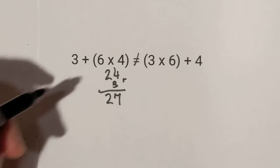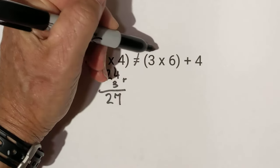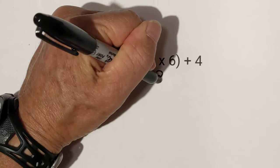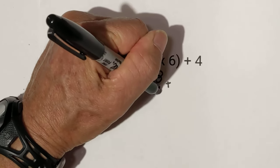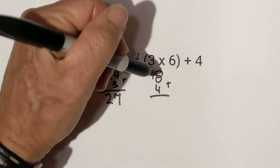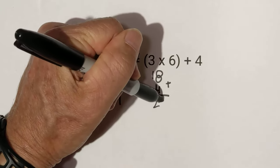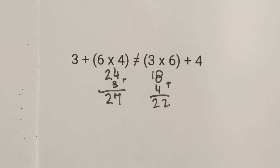But now, if you multiply on this side, 6 times 3 is 18, and 18 plus 4 is 22. So they are not equal.